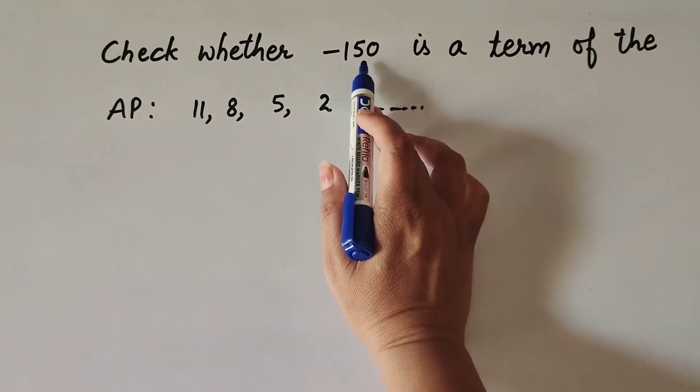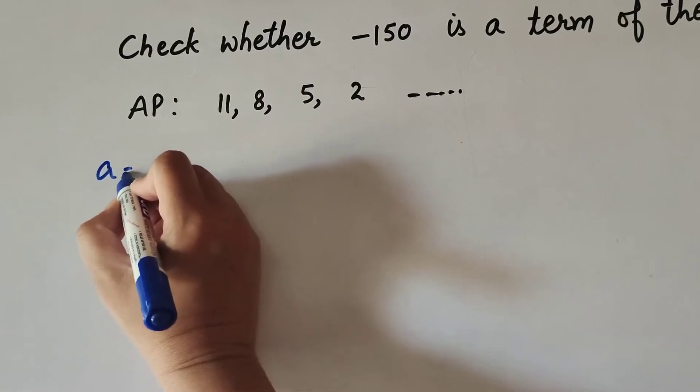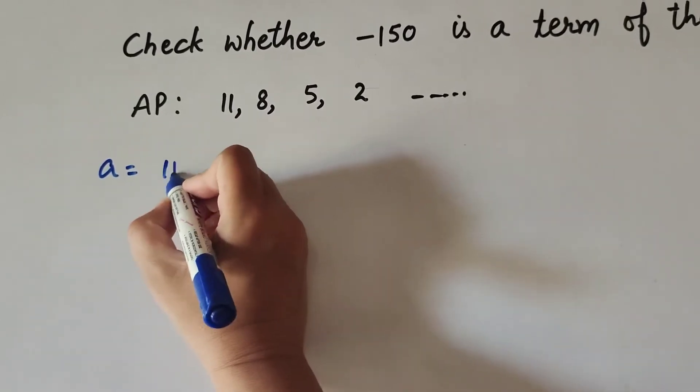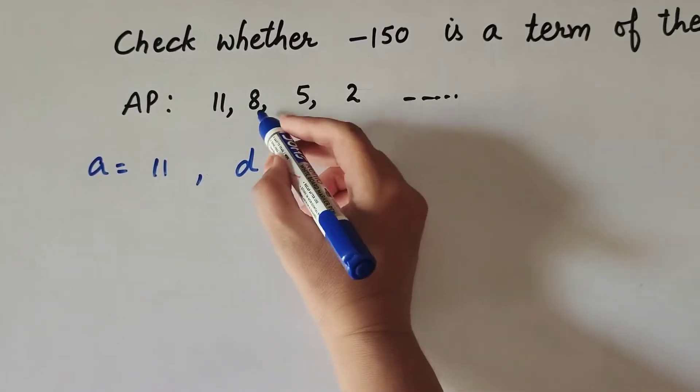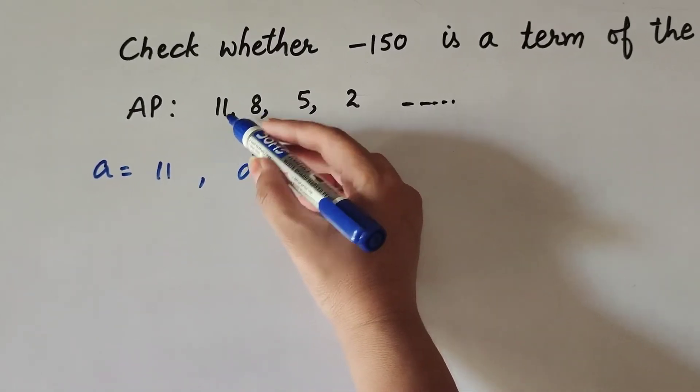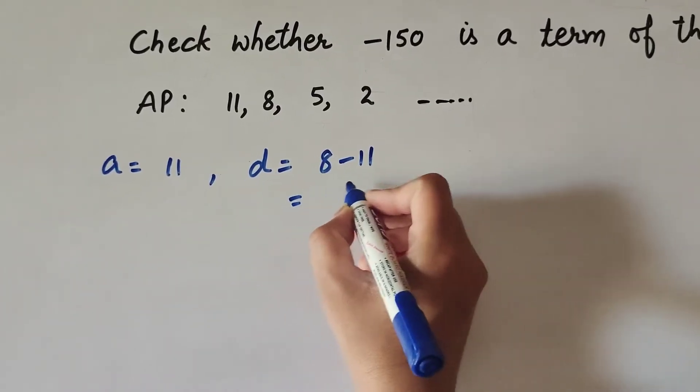Let's start. The first term a is equal to 11. The common difference d is equal to the second term minus first term: 8 minus 11 equals -3.